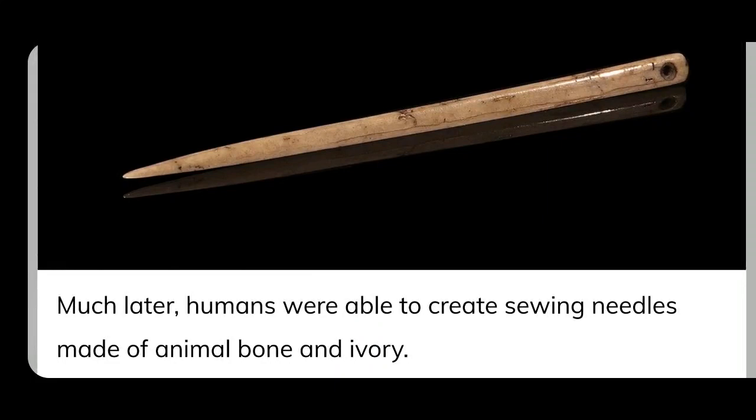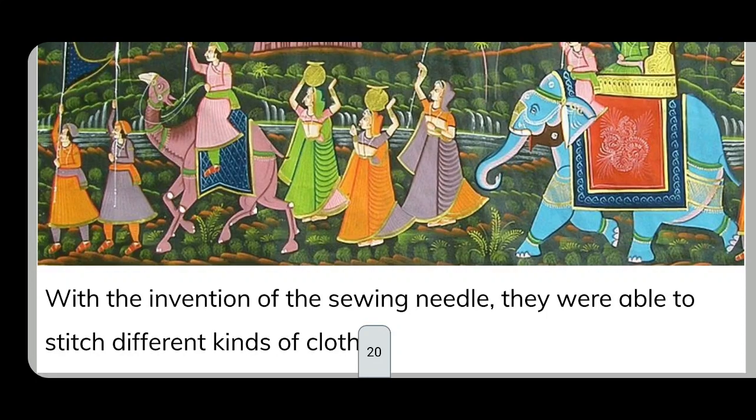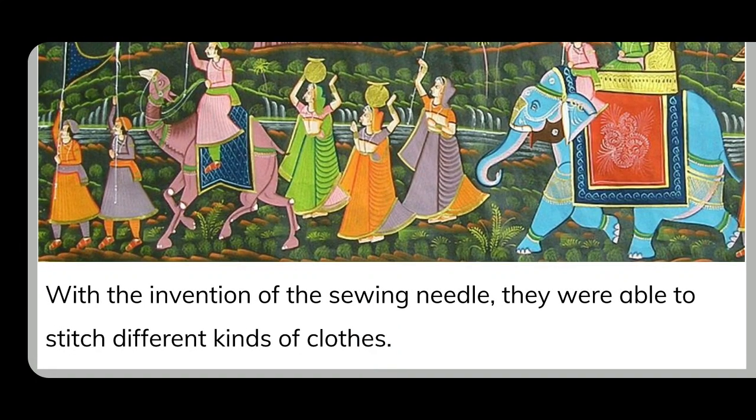With the invention of the sewing needle made from animal bone, they were able to stitch different kinds of cloth, and humans could make different types of stitched clothes.